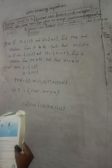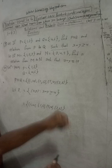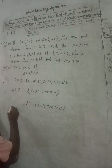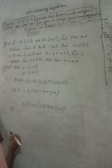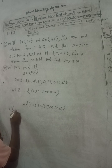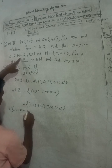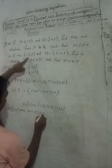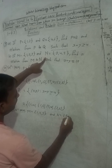So the relation from P to Q satisfying x plus y ≥ 4 is: {(1,4), (1,6), (2,4), (2,6)}. All pairs in P cross Q satisfy this relation.